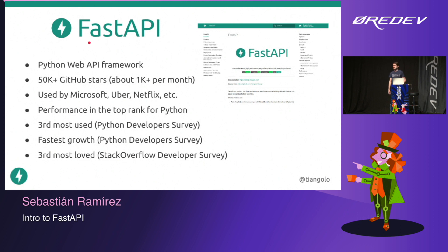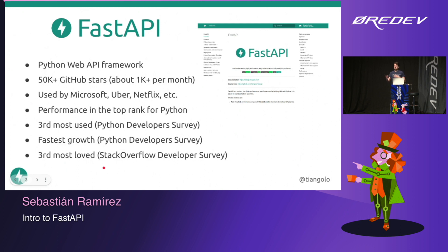FastAPI is a Python web API framework. How many of you have used Python? A bunch — awesome. FastAPI has been growing a lot. People have been liking it, and it's been growing in GitHub stars and fake imaginary points. It's used by a bunch of companies, and the performance is in the top rank of what you can get with Python. It was the third most used Python framework in the last Python developer survey, also the one with the fastest growth in Python frameworks. It was the third most loved framework in the Stack Overflow developer survey, right on top of Vue.js and React in that survey.